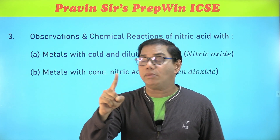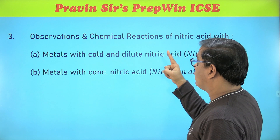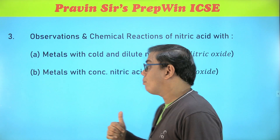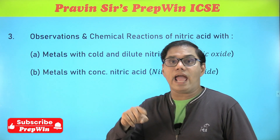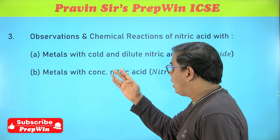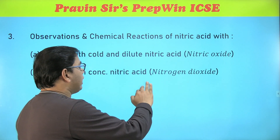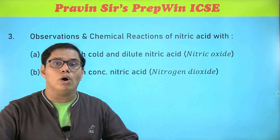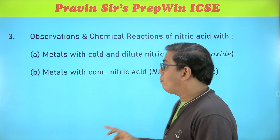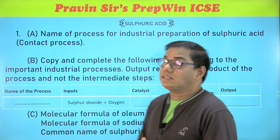In observations or chemical reactions of nitric acid: metals reacting with cold and dilute nitric acid — your product is nitric oxide (NO); write the observation according to this. Then metal reacting with concentrated nitric acid — your product is nitrogen dioxide (NO₂); the color of the gas is reddish-brown. After these three predictions, let us move on to the next chapter — sulfuric acid.